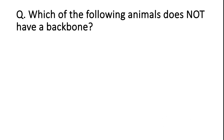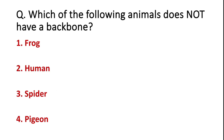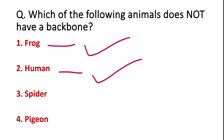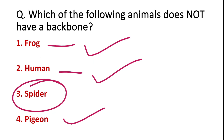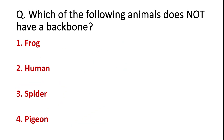Which of the following animals does not have a backbone? Options: Frog, Human, Spider, or Pigeon. Humans have a backbone — our spinal cord. Pigeons also have a backbone. Frogs also have a backbone. The correct answer is Spider, as it does not have a backbone.